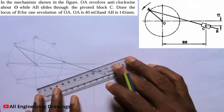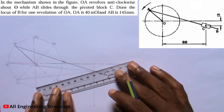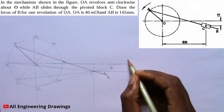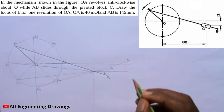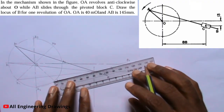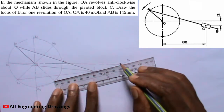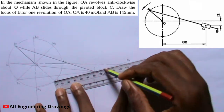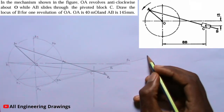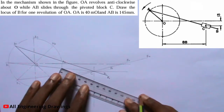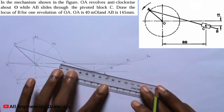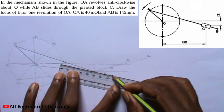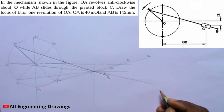Now for point A3. Remember that the length of the line should be 145mm and the line must pass through point C. I will label the end of the line B4. Now for point A5 — remember that the line should be 145mm and it must pass through point C. I will label the end of the line B5.